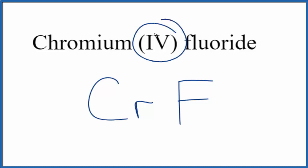We note that we have the Roman numeral 4 here that means the charge on the chromium here that's going to be 4 plus and we know that fluorine that's in group 17 sometimes called 7a that's 1 minus.